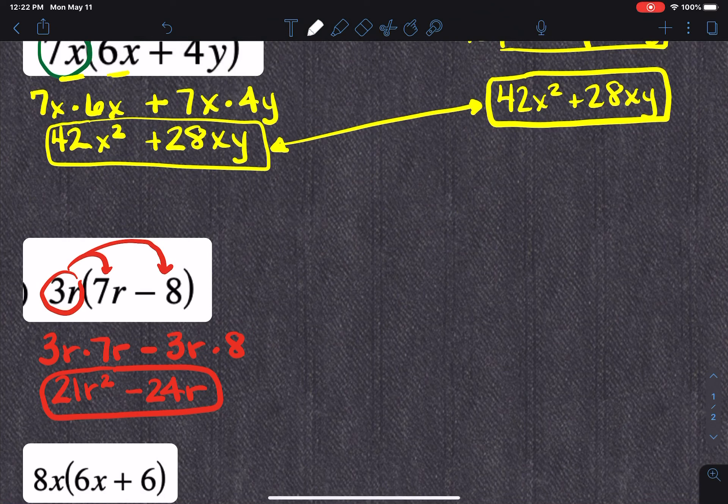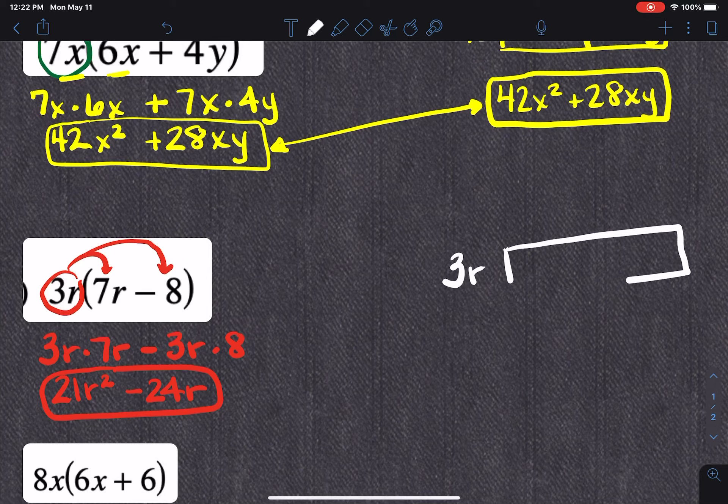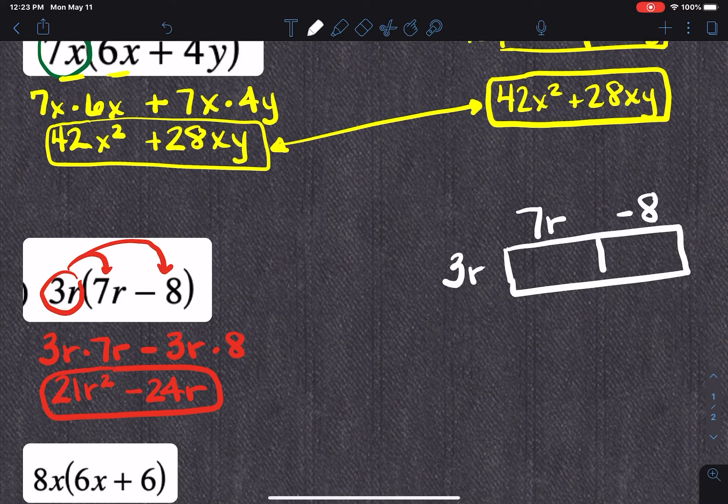Okay, so let's set up the box method. So 3R on this side. I'm going to set up my box. And then 7R. And then that minus 8, I'm going to make a negative 8. So make sure you don't lose your negative, just like we've done before. And honestly, it doesn't matter. If I put the 3R up here and the 7R minus 8 here, you'll still get the same answer. It's good either way. But I tend to start with whatever the smallest amount of terms is on this side. That just happens to be my habit.